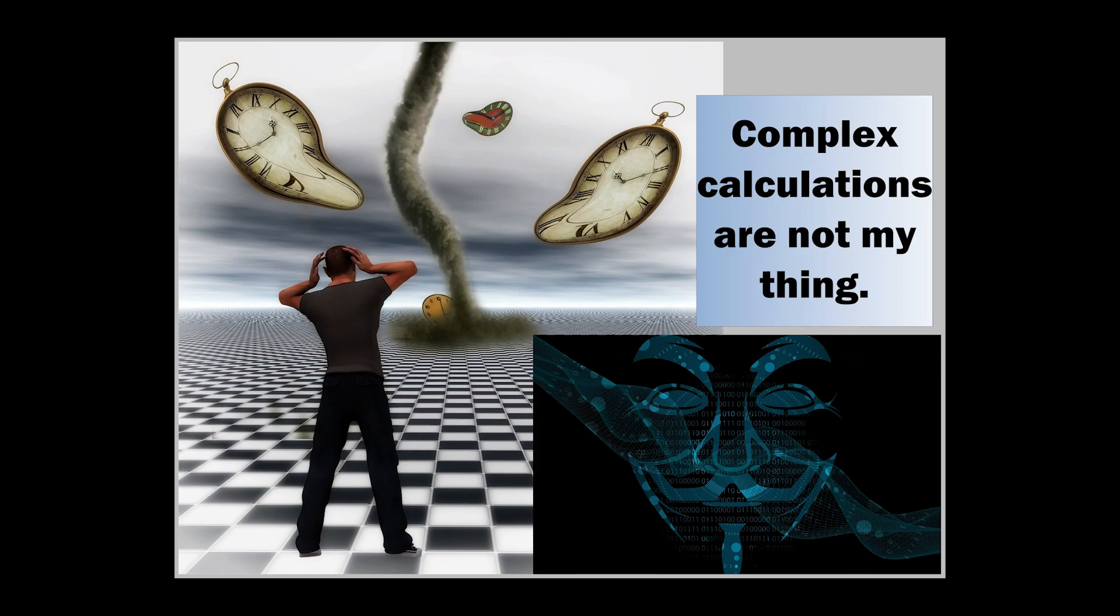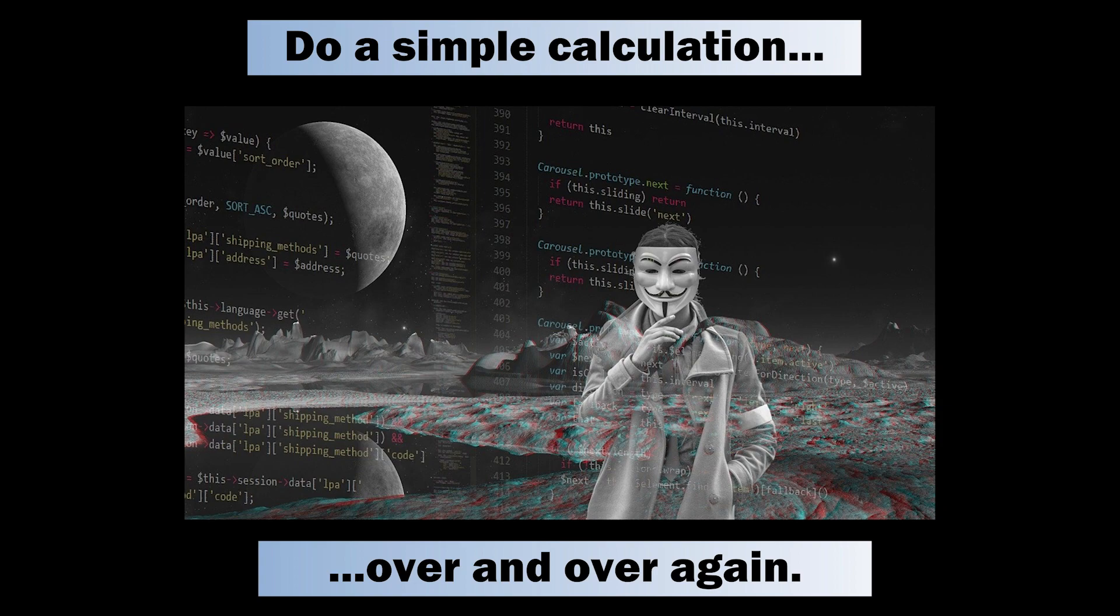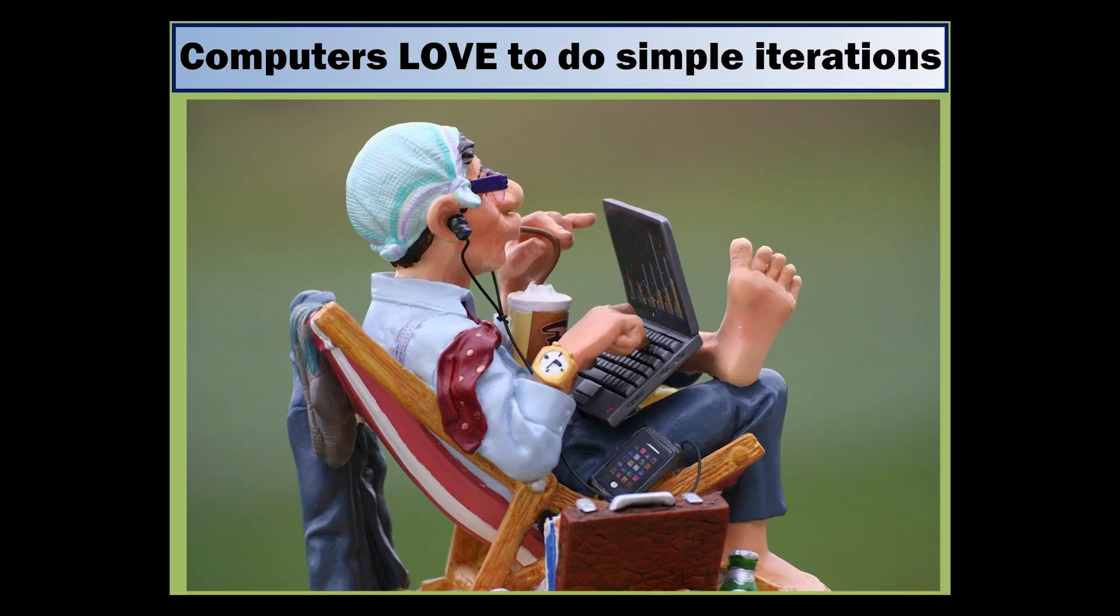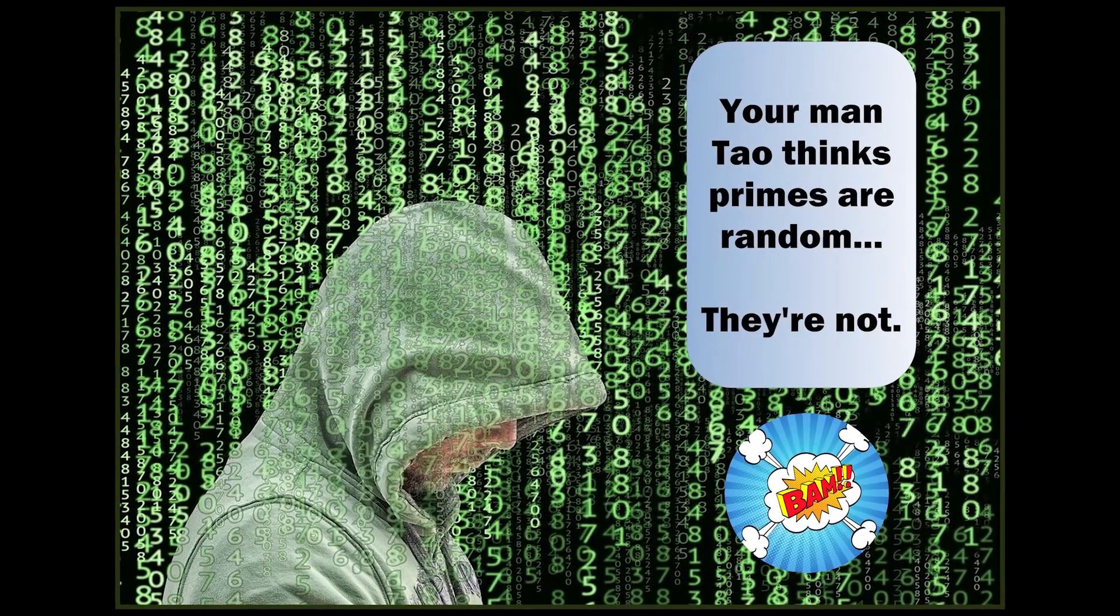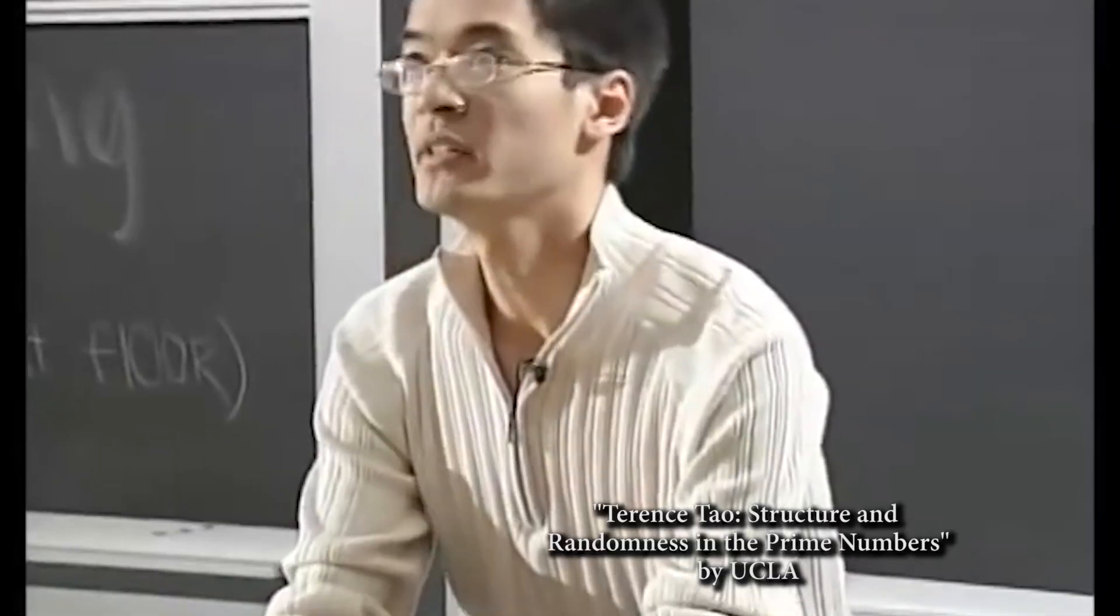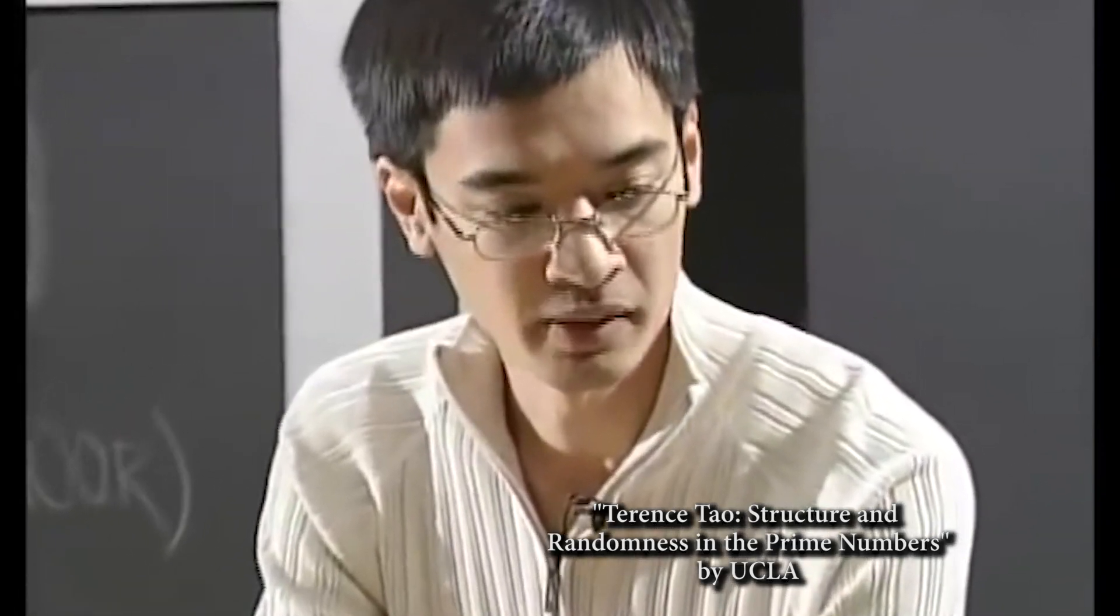Look babe, complex calculations are not my thing. Do simple calculations over and over again. Computers love to do simple iterations. Problem is, your man Tao thinks primes are random. They're not. We don't understand the sequence of primes all that well.